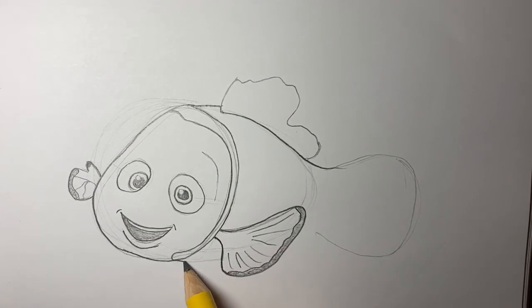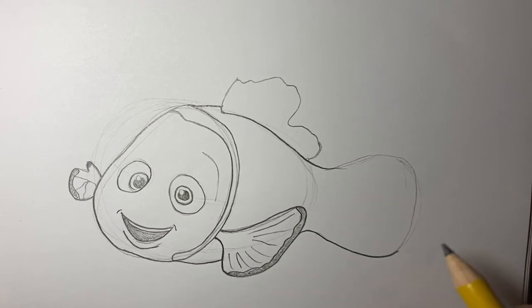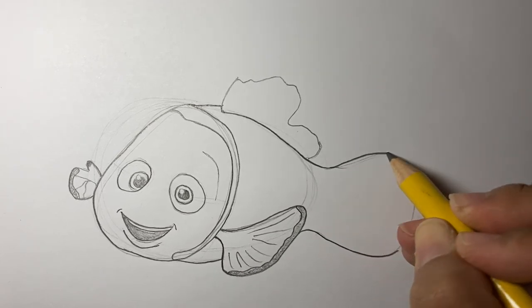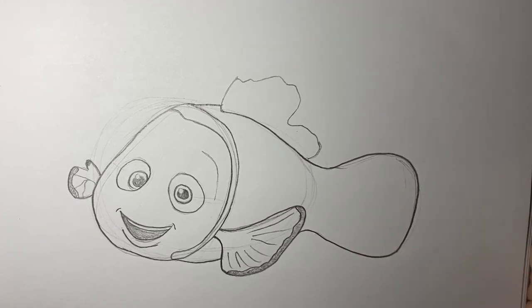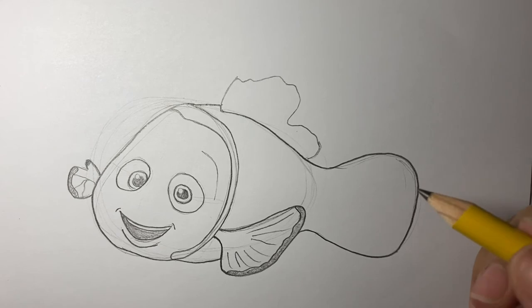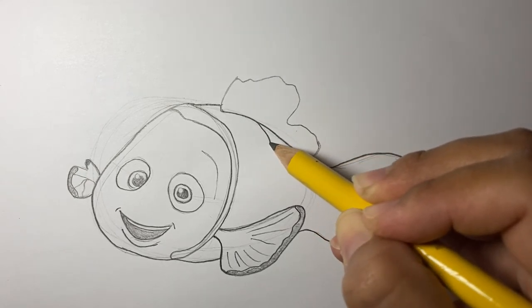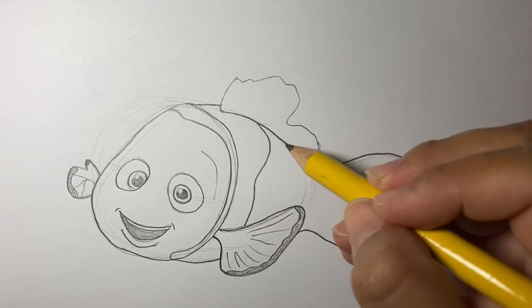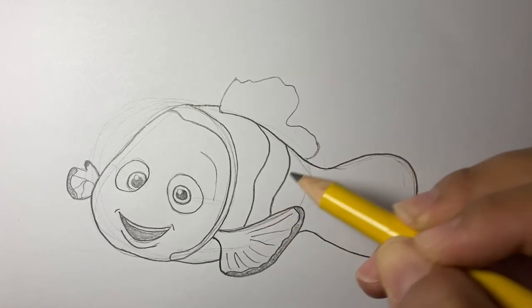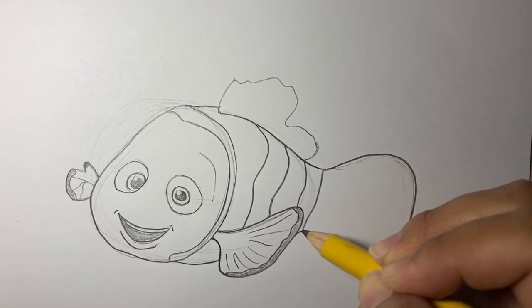And then don't forget the under part of him. Now I'm just going to make this nice and dark because that's about the shape I want it to look. And then you're going to have one line here, and then another line, one more right here, like that.